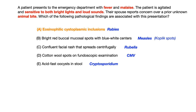Choice C — confluent facial rash that spreads centrifugally — is associated with rubella. If the test writer wanted you to pick measles or rubella, they wouldn't give you an animal bite as a risk factor; they would have given you lack of vaccination or travel to an endemic area. In this question, the risk factor is an animal bite, there's no mention of travel or lack of vaccination, and the clinical presentation is different. So we can eliminate measles and rubella.